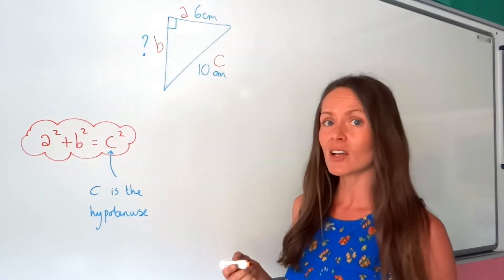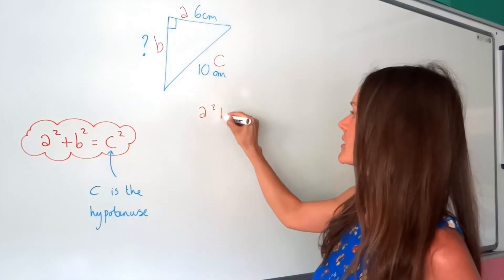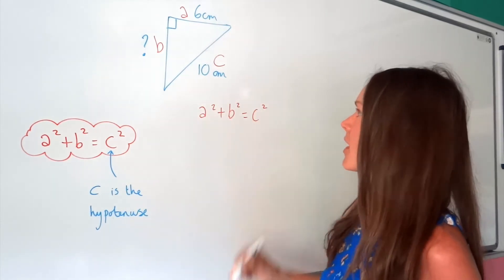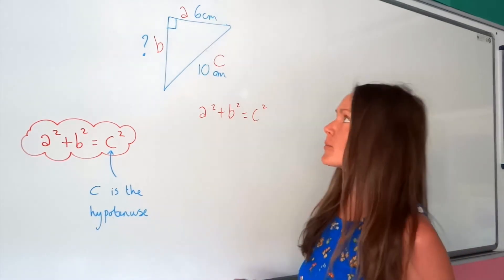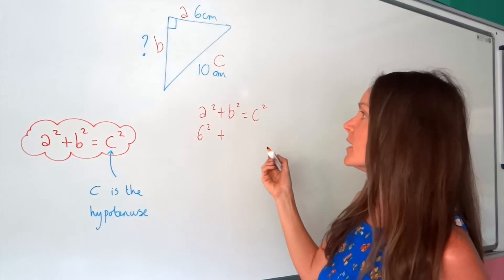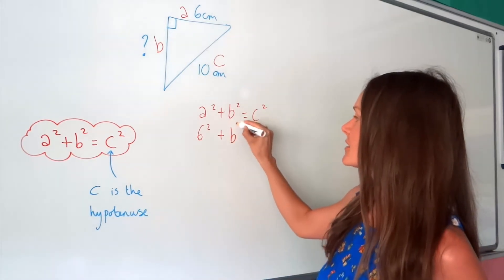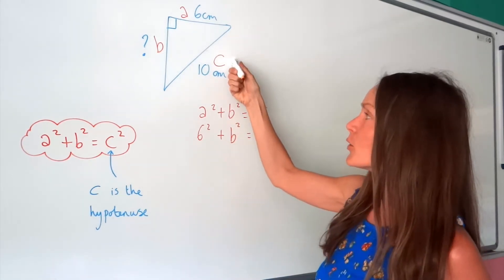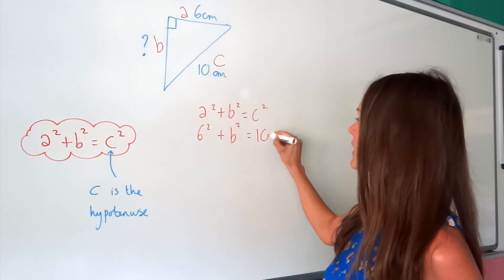So like in example number 1, start by writing out Pythagoras' theorem. Then substitute in the information you know. So A is 6, so I've got 6 squared. B, we don't know, so that one just stays the same. And this time we know the value of C is 10, so I can write 10 squared.